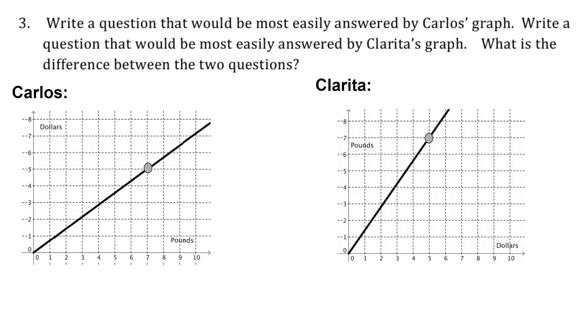Carlos chose to represent that with pounds as the independent variable on the x-axis and dollars as the dependent variable on the y-axis. Whereas Clarita chose to use dollars as the independent variable on the x-axis and pounds as the dependent variable on the y-axis.